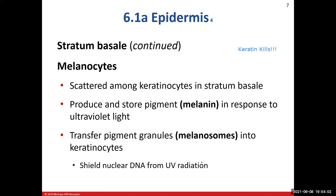Melanocytes are the second cell type in the stratum basale. They are sprinkled throughout this layer, and their job is to make and store the pigment melanin. Melanin gives our skin its darker appearance when exposed to ultraviolet radiation — sunlight. Melanocytes have organelles that make melanin, and they share melanin with neighboring keratinocytes through structures called melanosomes.